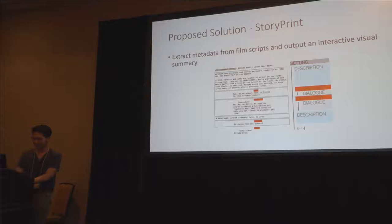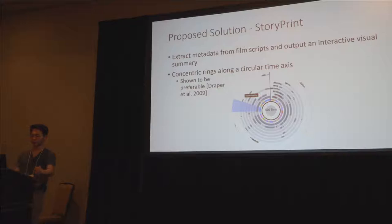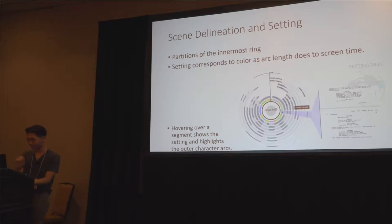To this end, in order to accomplish this goal, we leverage the extraction of metadata from film scripts. For example, we can take the setting, character, and dialogue information — dialogue that corresponds to the characters — and output an interactive visual summary. In particular, we use concentric rings along a circular time axis to visualize these settings and the characters, and this has been shown to be preferable for highlighting relationships and patterns within data.